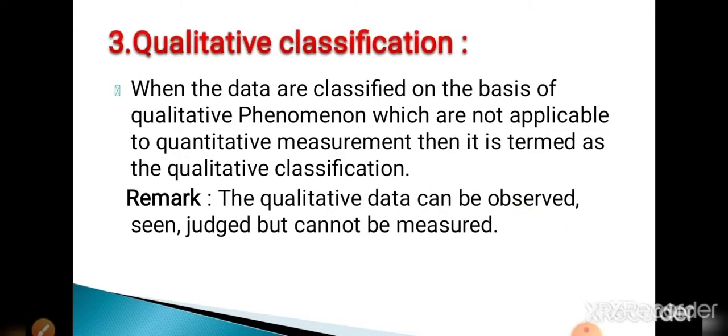Next is qualitative classification. If the data is classified on the basis of qualities, that means attribute-type data, such classification is called qualitative classification. Qualitative data means it can be observed, seen, and judged but cannot be measured, whereas quantitative data means numerical values which can be measured.